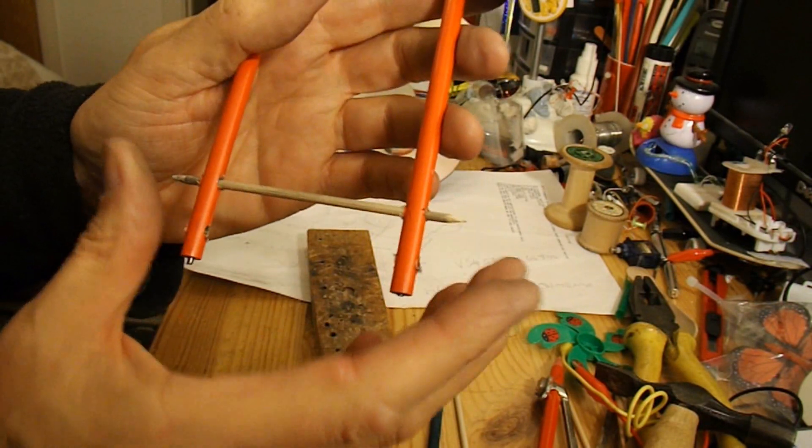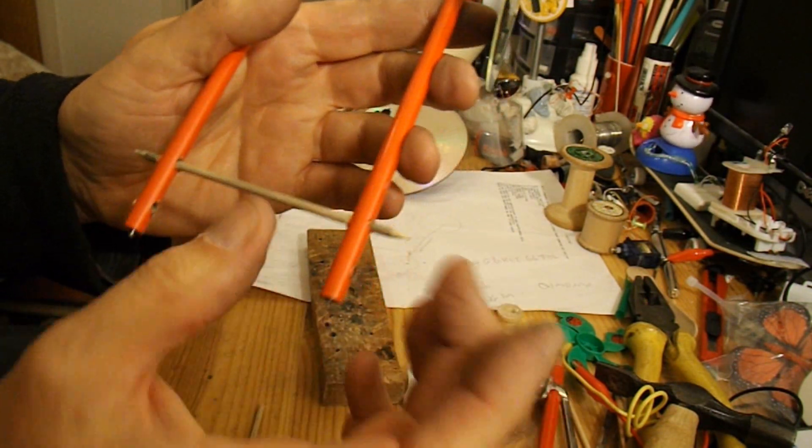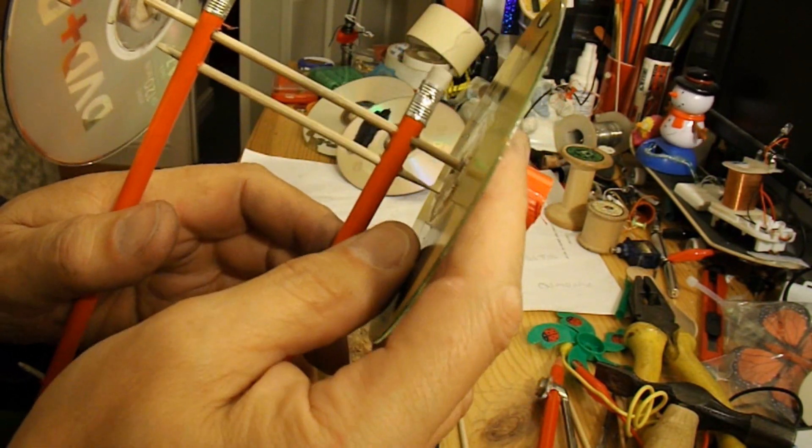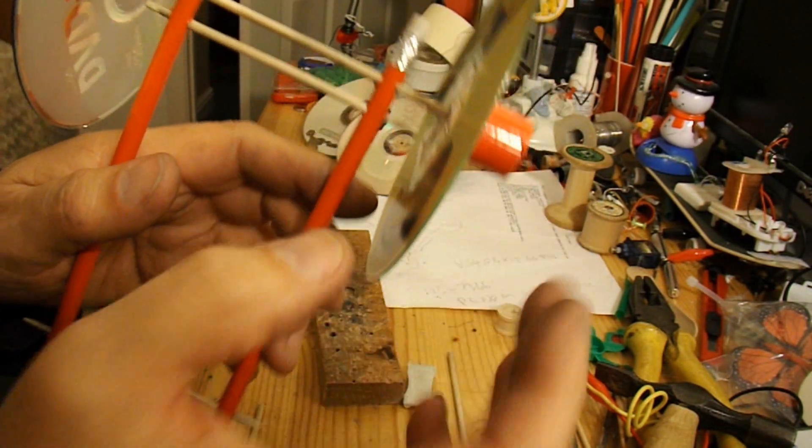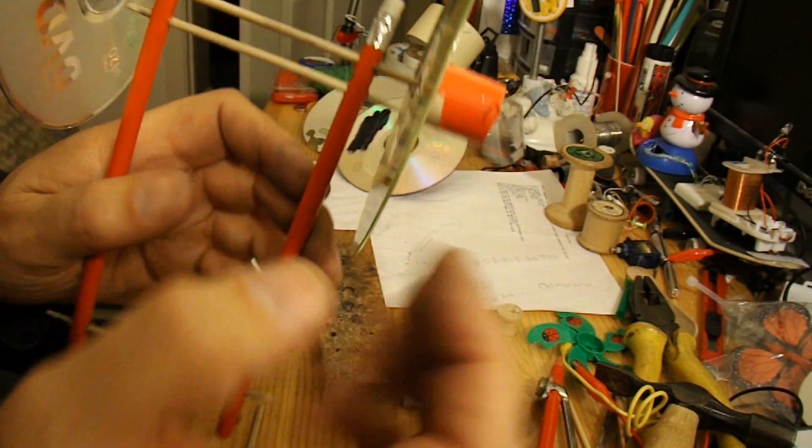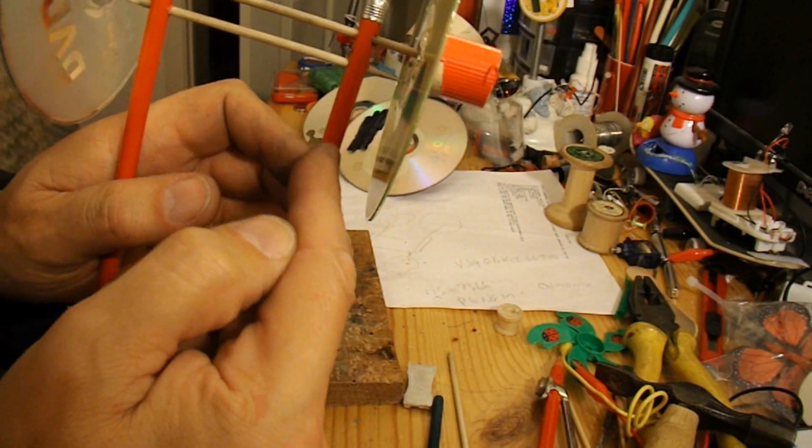I'm leaving these cross members pointing out quite a bit because they'll actually stop the wheels sliding in and out too far, and the only friction you'll get is just by the tiny point rubbing against the wheel rather than the wheels coming right up and rubbing against the bodywork.